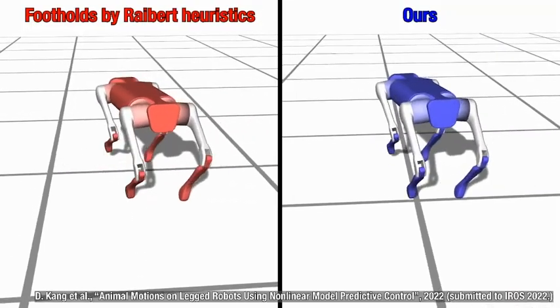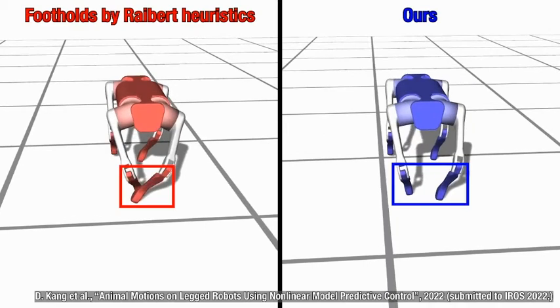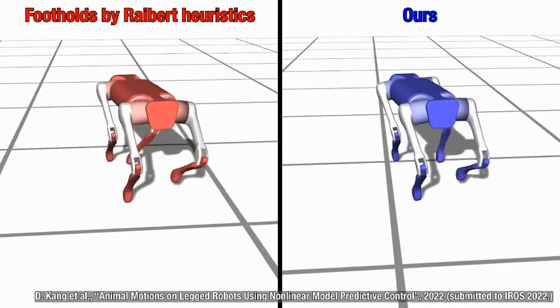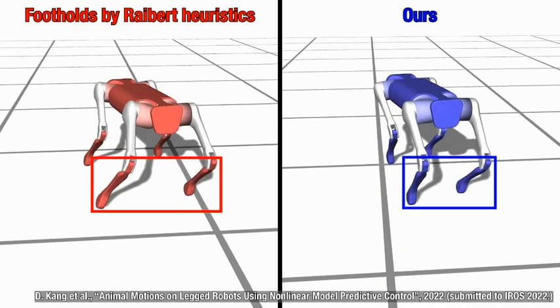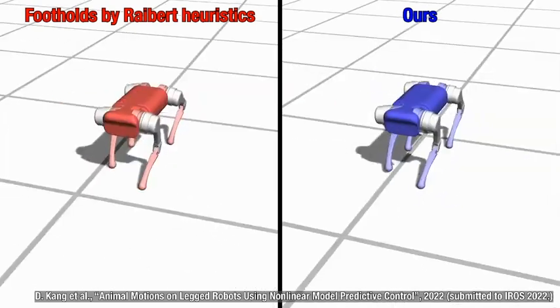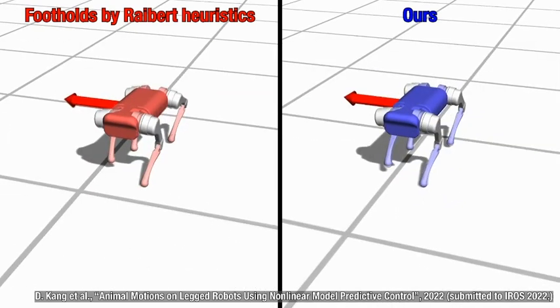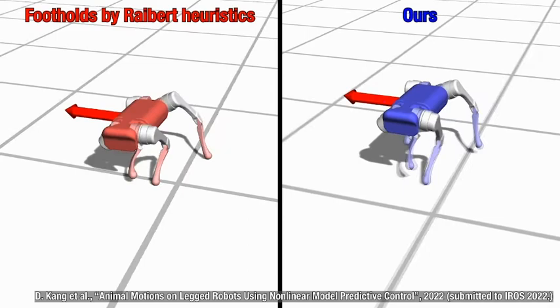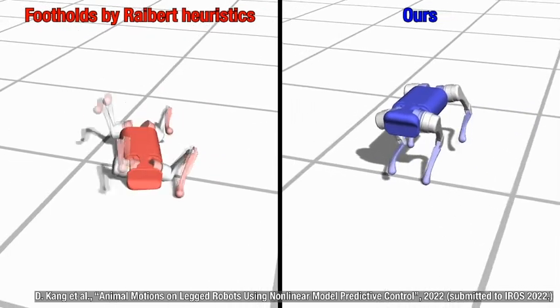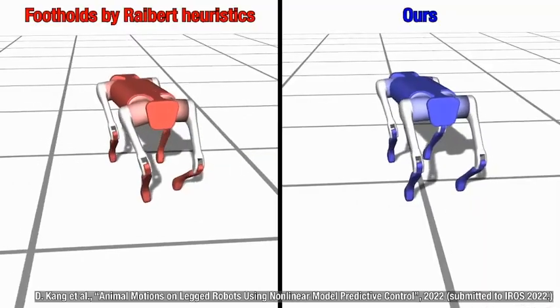The footholds optimization significantly improves the robustness of the controller. As you can see in this video, while labeled heuristics yield too aggressive foot displacements that lead to undesirable crossing or excessive stretching of legs, our method can sustain appropriate step widths while ensuring stability.